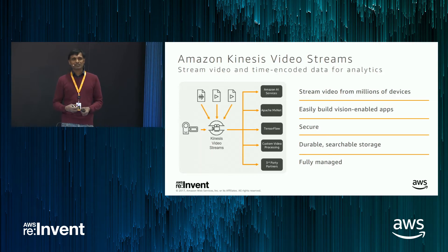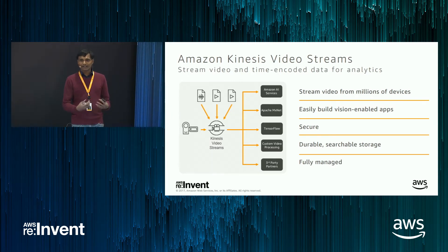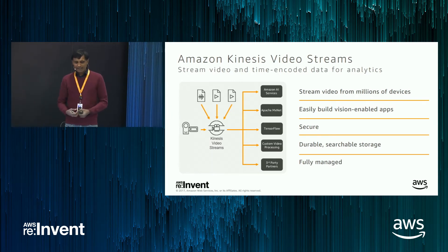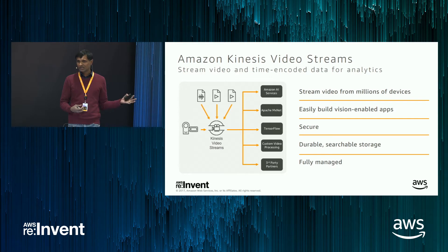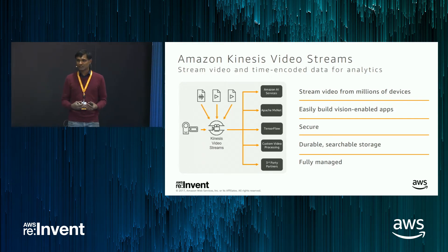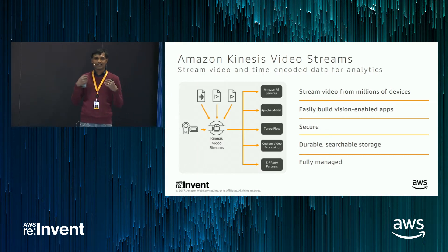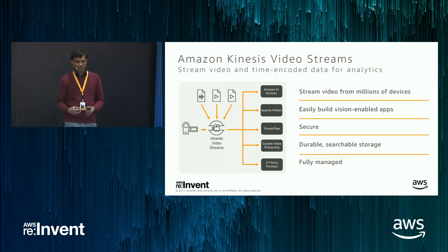What Kinesis Video Streams does is just like what Kinesis Data Streams does for other data — it makes it easy for you to stream video from millions of devices. Scale is obviously very important in this space; you should be able to scale to 10, 100, or millions of devices with near-infinite scaling.